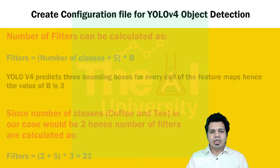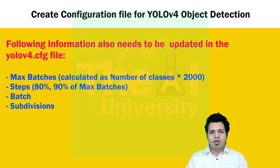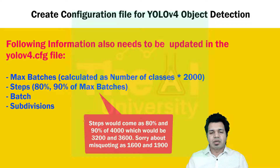We also need to update certain other lines like max_batches, which is calculated as number of classes multiplied by 2000. This parameter tells us the total number of iterations for model training. The parameter named steps represents the number of iterations after which the learning rate will be multiplied by the scale factor, and is calculated as 80% and 90% of max_batches. For our coffee and tea dataset, max_batches will be 2 × 2000 = 4000, and steps will be 1600 and 1900 respectively.